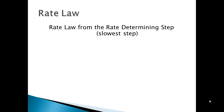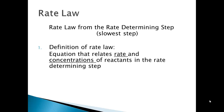We're going to take that idea of the slowest step — the rate determining step — and use it to write an equation called the rate law. The rate law is an equation that relates the rate of reaction to the concentrations of reactants in the rate determining step. We take our rate law equation only from the slowest step of our mechanism, because just like a bottleneck, this step controls the rate of reaction the most.